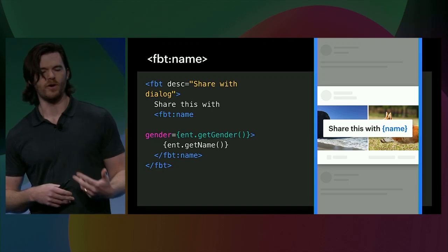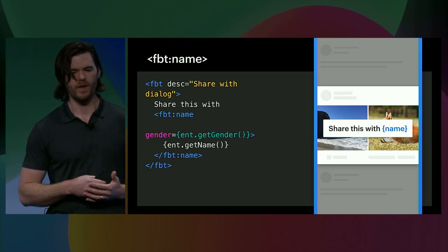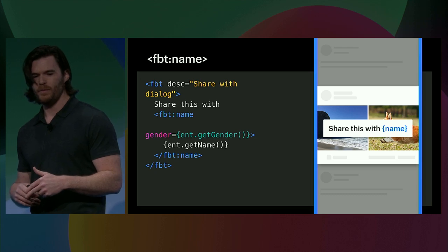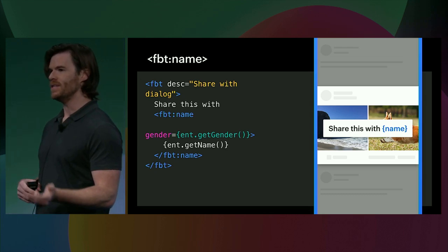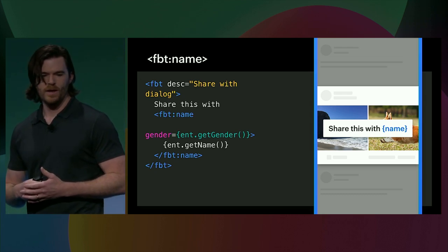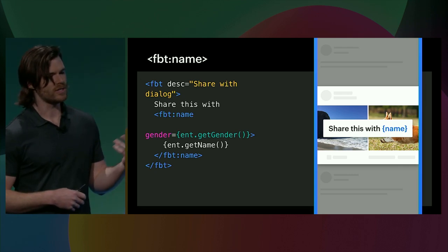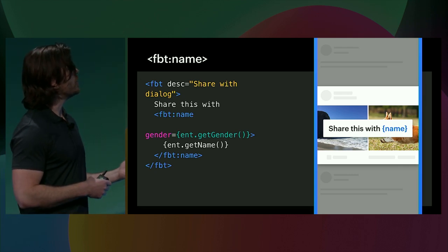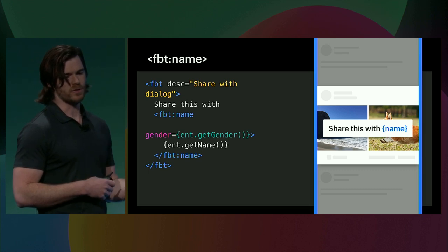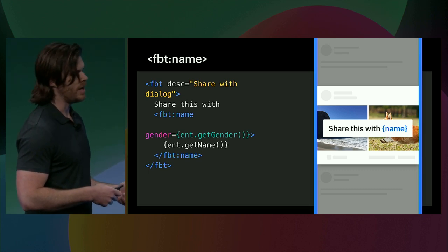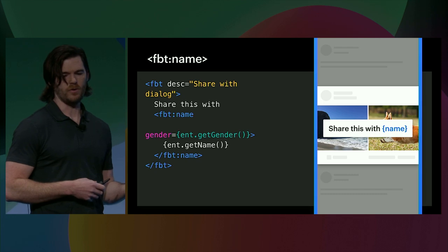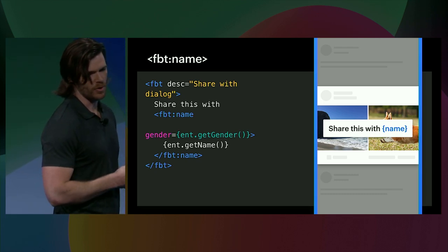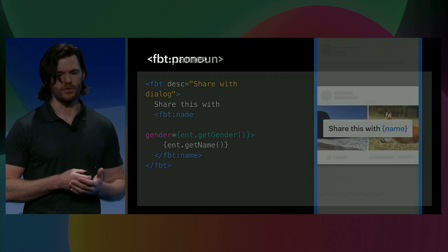Interpolated tokens can also vary on gender. We have a special construct that functions just like FBT param, but where gender is required — and this is FBT name. The text is extracted just like FBT param, but where the name token is defaulted and the gender is provided. The translator can vary the value of the translation depending on the gender of that token, and we'll access that payload correctly at runtime.